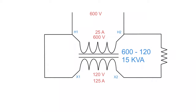The next step, as discussed in the video on transformer ratings, is to determine polarity. We need to determine the polarity of each winding. For this example, we'll go with negative on one line and positive on the other, which tells us H1 is negative and H2 is positive.